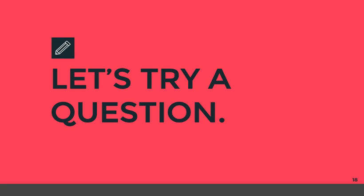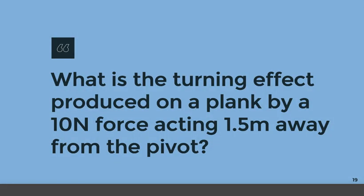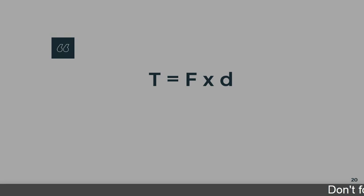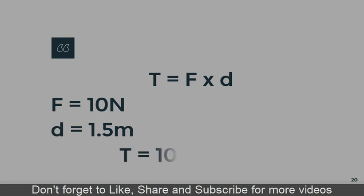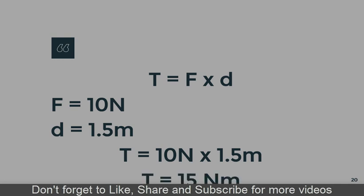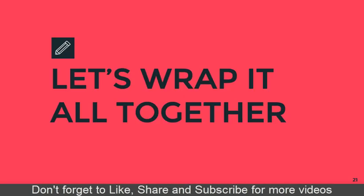Let's look at a simple question. What is the turning effect produced on a plank by a 10 newton force acting 1.5 meters away from the pivot? We are given force as 10 newtons and distance as 1.5 meters. Using T equals F times D, we get T equals 10 times 1.5, which gives us 15 newton meters.